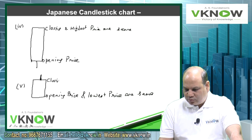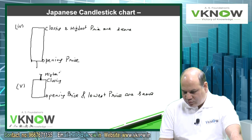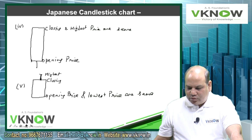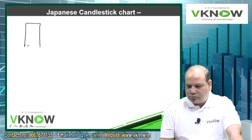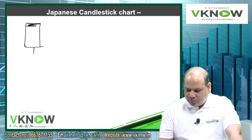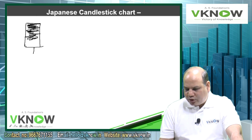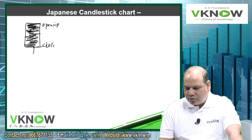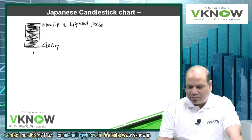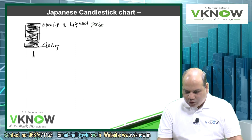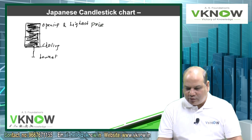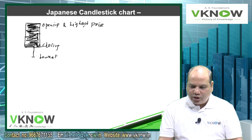Here you write closing and this is highest. Now write down one next category in black. When do we write in black? When opening price is more than closing price. And second, opening and highest price are same — whatever was the opening price, that was the highest price. Market never went above that, but market continued to fall. It went down to a point, then may be slightly recovered and closed. So that is called opening and highest prices are same.